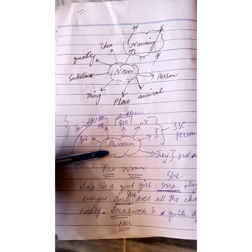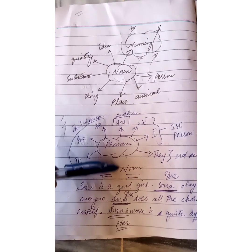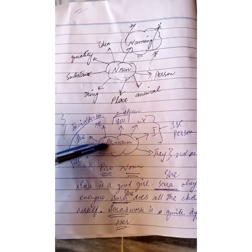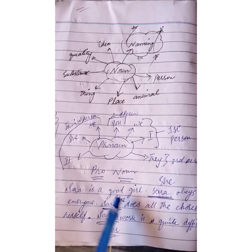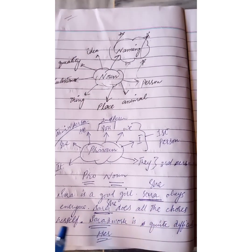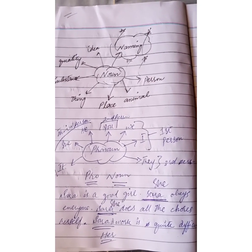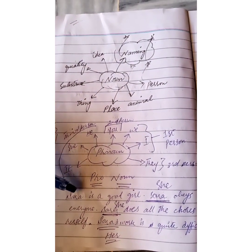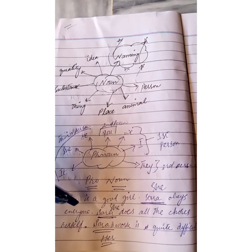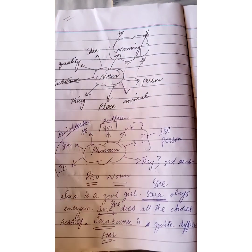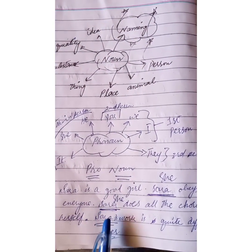Our second part of speech is pronoun. I have divided this word into two parts: 'pro' and 'noun.' A word that substitutes or takes the place of a noun is called a pronoun. For example: 'Sarah is a good girl. Sarah obeys everyone. Sarah does all chores herself. Sarah's work is quite difficult.' This looks quite monotonous and boring. If I replace Sarah with a pronoun: 'Sarah is a good girl. She obeys everyone. She does all the chores herself. Her work is quite difficult.' I have replaced Sarah with the pronouns 'she' and 'her.'